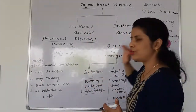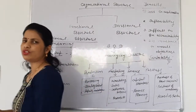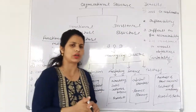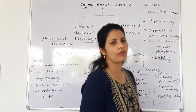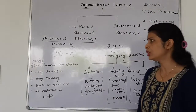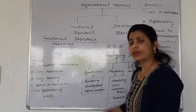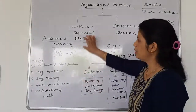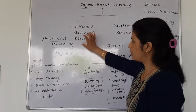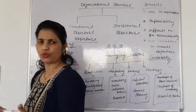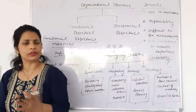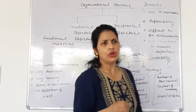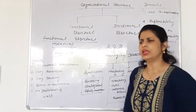Digital structure is that structure in which we make the departments in our organization on the behalf of product. Now, first of all, we have functional structure ka meaning, which I have already discussed.